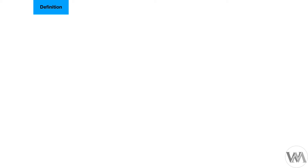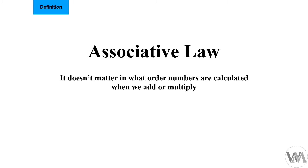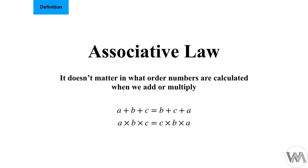Our second law is the associative law. The associative law says it doesn't matter in what order numbers are calculated when we add or multiply. So a plus b plus c can also equal b plus c plus a, or a plus c plus b, and so on. The same with multiplication: a times b times c will equal the same as c times b times a, or a times c times b — the order doesn't matter, and we will still get the same result, but only if we add or multiply.